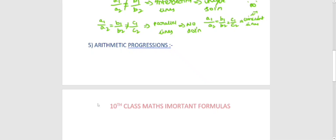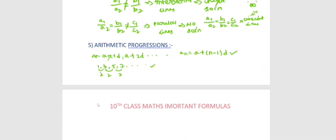Next is arithmetic progression. The form of an AP is 1, 3, 5, 7 and so on. The common difference: 3 minus 1 equals 2, 5 minus 3 equals 2, 7 minus 5 equals 2 — the same common difference throughout. The nth term formula is a plus (n minus 1) into d.